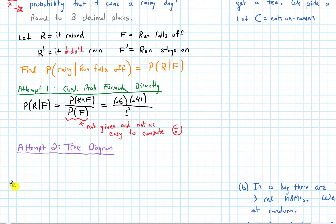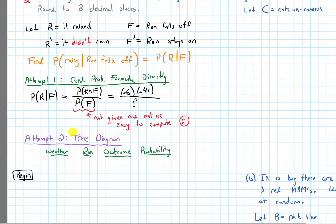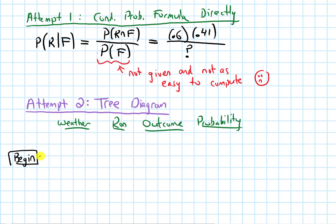Let's write down a section for where we'll begin, and then let's label these stages. There's a question of the weather, and then there's a matter of Ron and what happens with him, and then the outcome and the probability. From where we begin, the weather could either be rain, which is R, or not rain, which is R complement. And from either of those, either Ron falls, which is F, or he stays on, which is F complement.